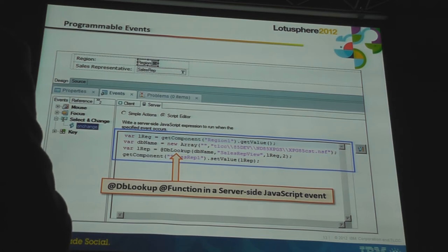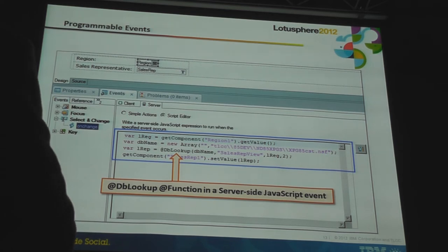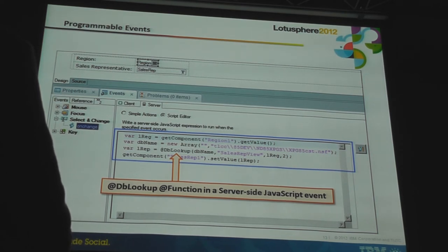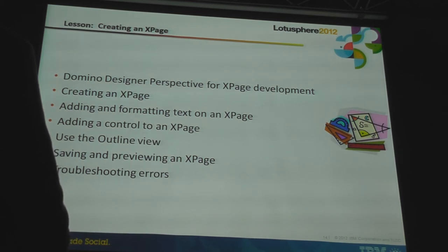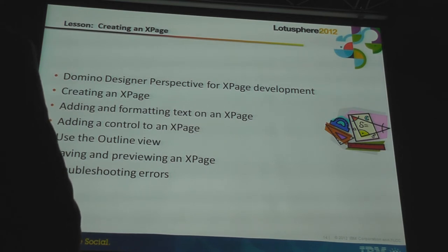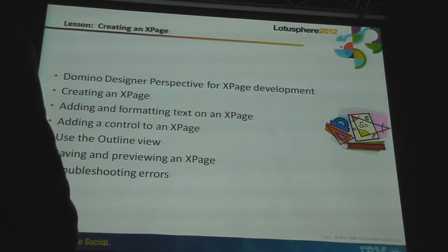This is showing us some server-side JavaScript, and right in the middle of that JavaScript we see an @dblookup. You might notice some subtle differences — commas instead of semicolons to separate the arguments — because it is JavaScript. We're going to get into another lesson. We'll look at what tools are available in Designer to develop your XPages, the procedure for creating an XPage, adding controls to an XPage, the utility of the Outline view for selecting and managing components, and we'll even look at troubleshooting.